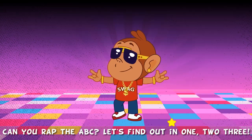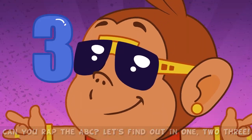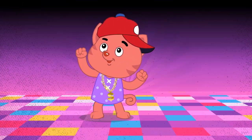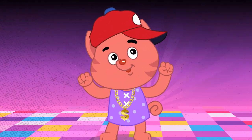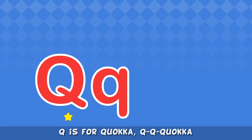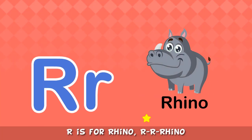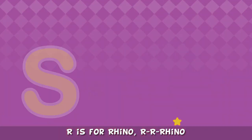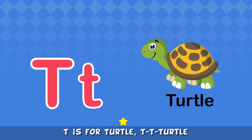Let's find out in 1, 2, 3! Q is for Quokka, K, K, Quokka. R is for Rhino, Vroom Vroom, Rhino. S is for Snake, S, Snake. T is for Turtle, T, T, Turtle.